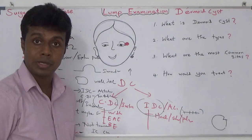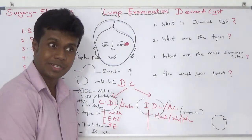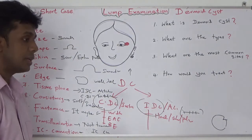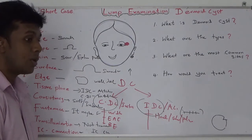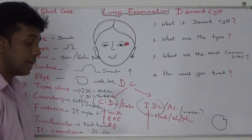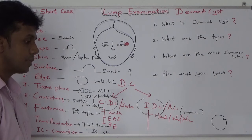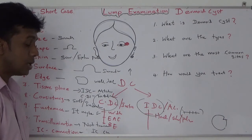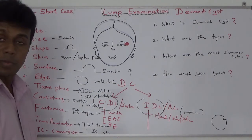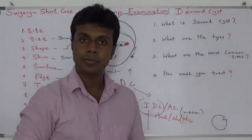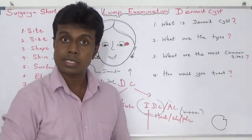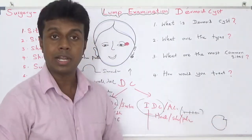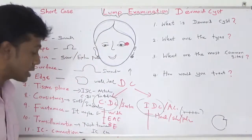When presenting the case: 'There is a hemispherical-shaped lump over the lateral side of the left eyebrow, measuring 2 cm in diameter. There is no contour change or scar in the skin. The surface is smooth, edges are well-defined. It is not attached to the skin or underlying structures. Consistency is soft, fluctuant, and not transilluminant. Clinically, it did not increase in size with raised intracranial pressure. My probable diagnosis is external angular dermoid cyst. I would like to offer excision under local or general anesthesia after excluding intracranial connection.'